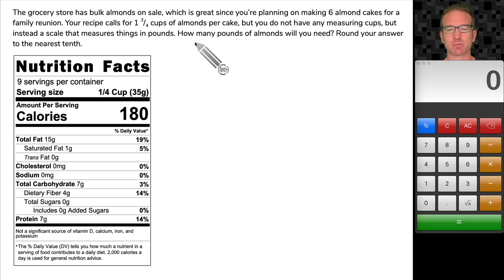So pause the video, read over this problem. And once you have read it, you'll realize the key things here are we need six almond cakes. The recipe calls for one and three fourths cups of almonds per cake.